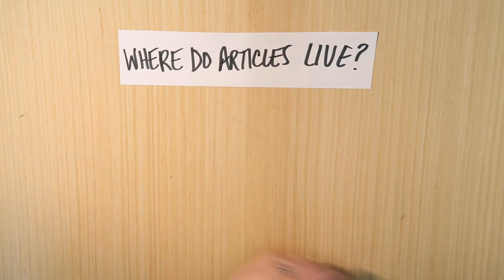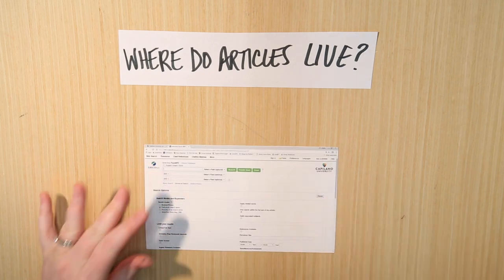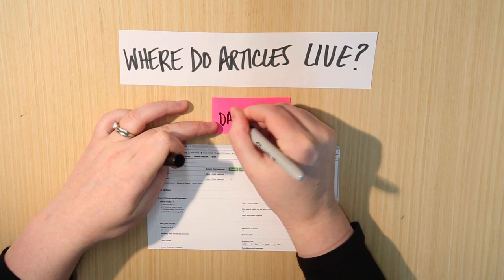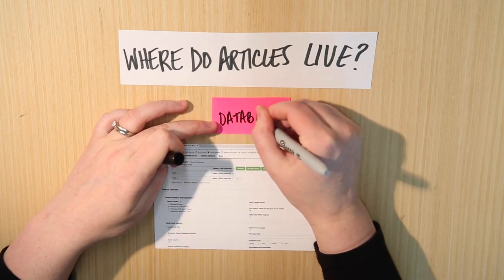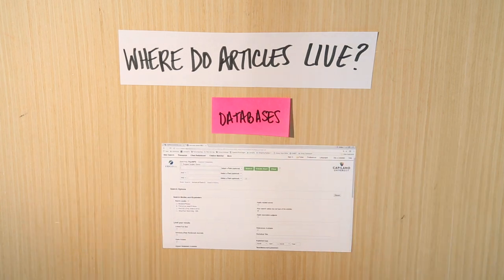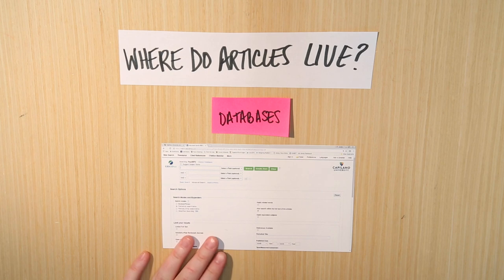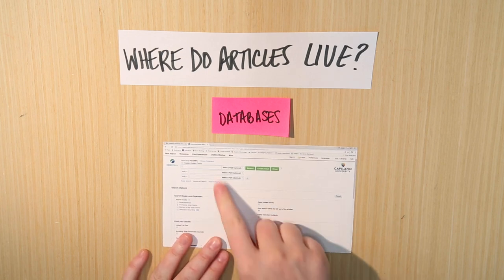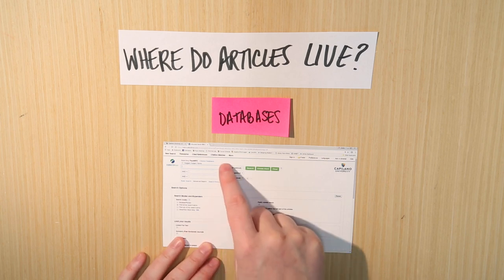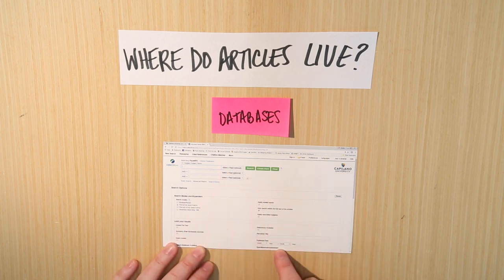Instead, what we're going to do is we're going to go into a database. What I have here is a little capture of what one of our databases in the library looks like, and this one's called PsycInfo. You can see already that it's already more organized. There's a lot more different ways that you can search in it. It's got these different boxes, it's got all these different buttons you can click, and it's quite different from Google.